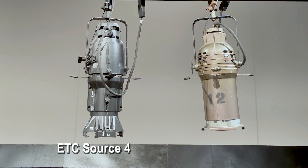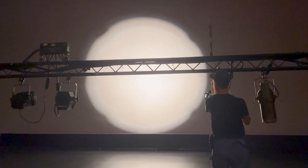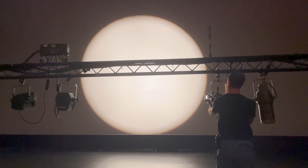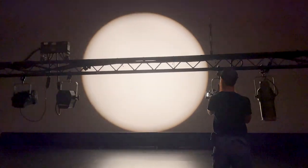Here we have an ETC Source 4 and an Altman 360Q. This type of unit is an ellipsoidal reflector spotlight, or ERS. They are also sometimes called Lecos after the original ERS. The ERS is the most versatile unit in the inventory and can be used anywhere from washes to tightly focused specials.